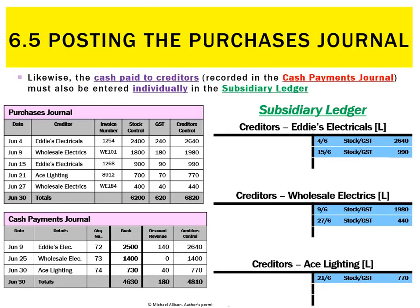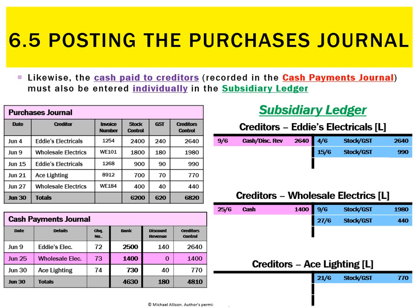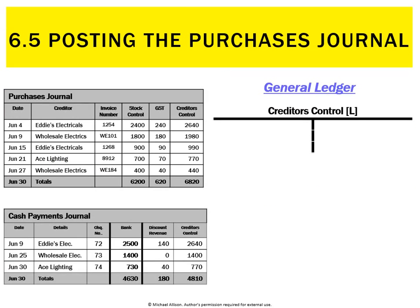Creditors also decrease when we pay them back, and when they give us a discount called discount revenue. We get that info from the cash payments journal. On the 9th of June, Eddie's Electricals — we paid them back 2500 and got a discount of 140, decreasing their ledger by 2640, entered on the actual date, the 9th. On the 25th we paid back wholesale electricals with no discount, so the reference is just 'cash,' whereas Eddie's Electricals' reference was 'cash slash discount revenue.' On the 30th there's a discount of 40 on top of a payment of 730, decreasing Ace Lighting by 770.